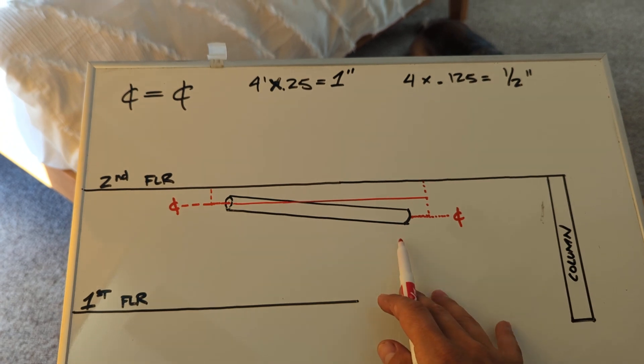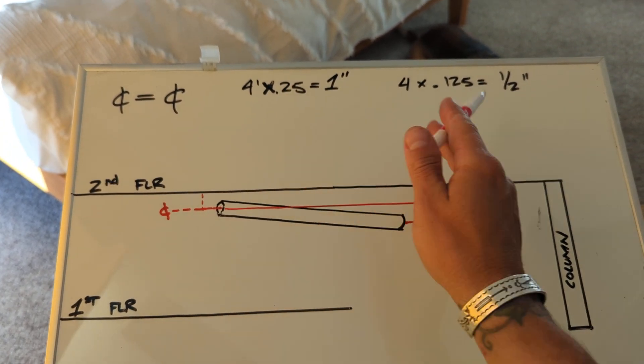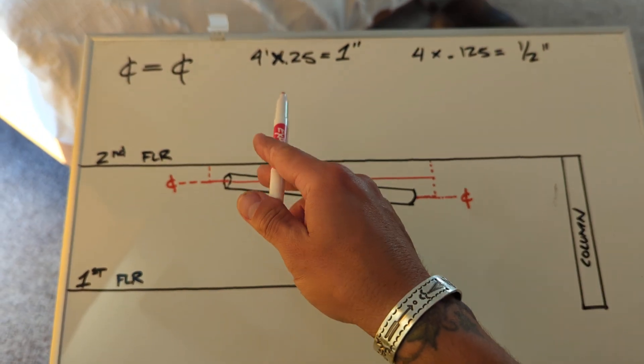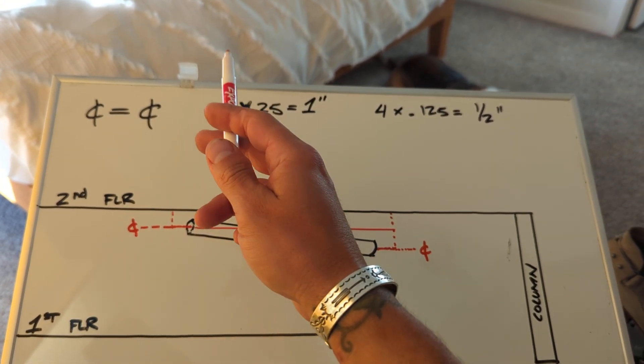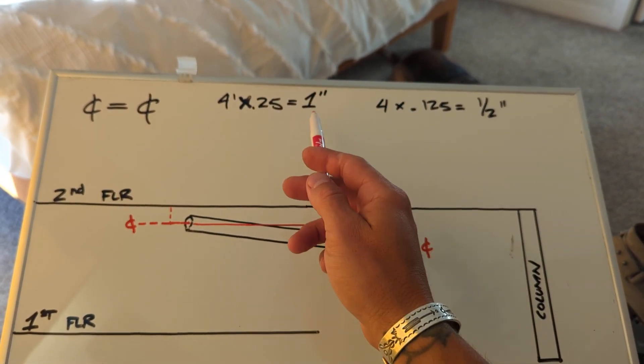It has to fall at a grade. So that grade, depending on the different sizes of pipe per code, let's say it needs to fall at a quarter inch per foot. At 4 feet times 0.25 is 1 inch of fall.